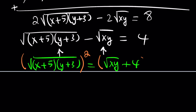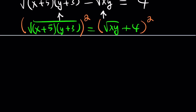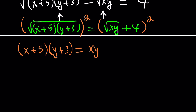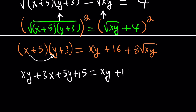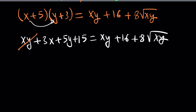Once they're on different sides, we can square. The left-hand side gives us (x+5)(y+3). On the right-hand side we get xy plus 16, plus the 2ab term which is 8 times the square root of xy. Expanding gives us xy plus 3x plus 5y plus 15 equals xy plus 16 plus 8 times the square root of xy. Now xy cancels out.